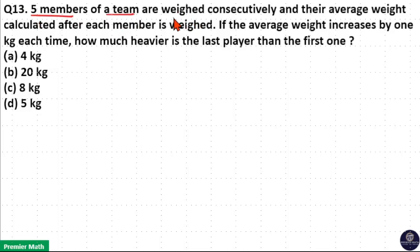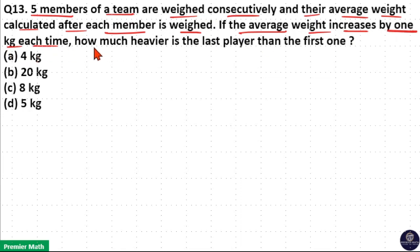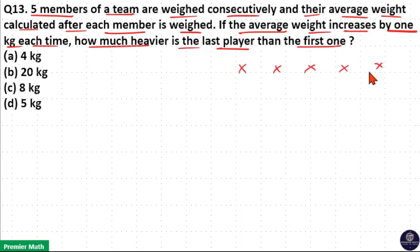5 members of a team are weighed consecutively and their average weight calculated after each member is weighed. The average weight increases by 1 kilogram each time. How much heavier is the last player than the first one? Here there are 5 players, and the average weight increases by 1 kilogram each time they are weighed consecutively.